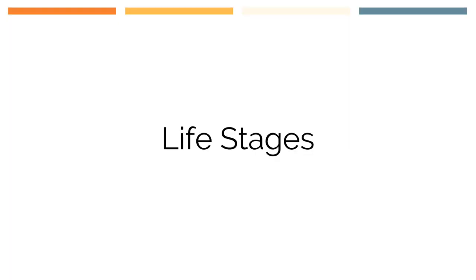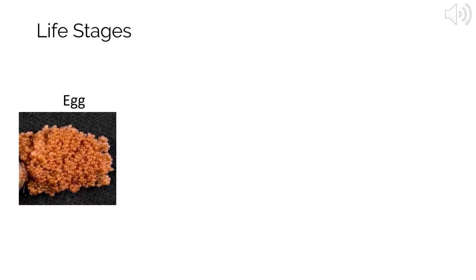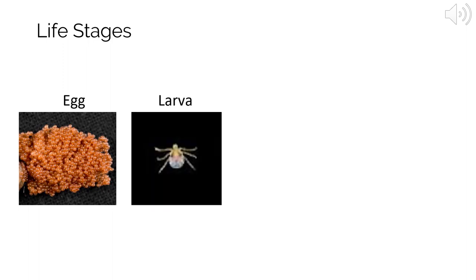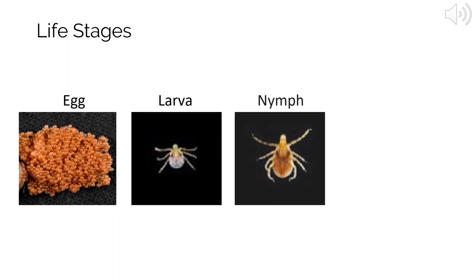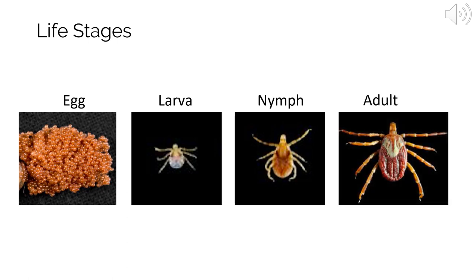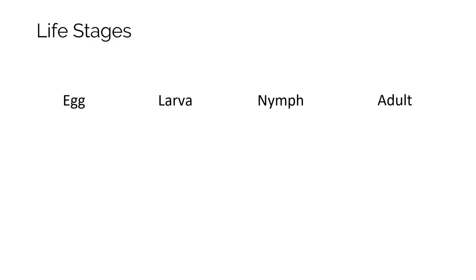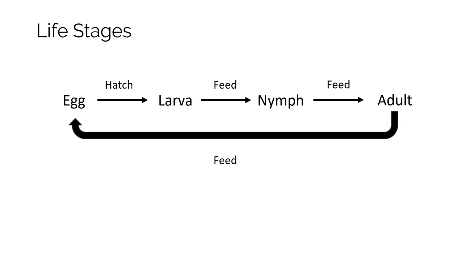Ticks have four different life stages: egg, larvae that only have six legs, nymphs with eight legs, and adults also with eight legs. Once the egg hatches, the tick needs to feed in order to progress to each of the next life stages. After feeding, the tick drops off the host and then molts into the next life stage. Adult females need to feed an additional time in order to produce and release eggs into the environment and to continue the life cycle.